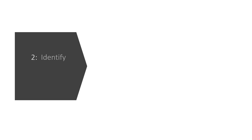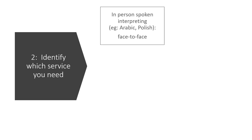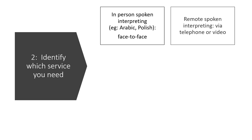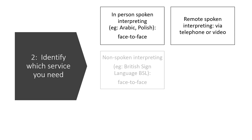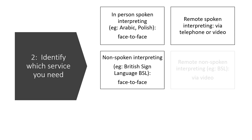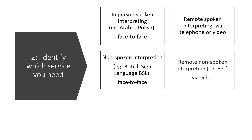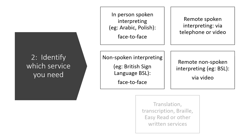Step two: identify which service you need. In-person spoken interpreting, for example Arabic or Polish, face-to-face. Remote spoken interpreting via telephone or video. Non-spoken interpreting, for example British Sign Language or BSL, face-to-face. Remote non-spoken interpreting, for example BSL via video. Or translation, transcription, braille, easy read or other written services.